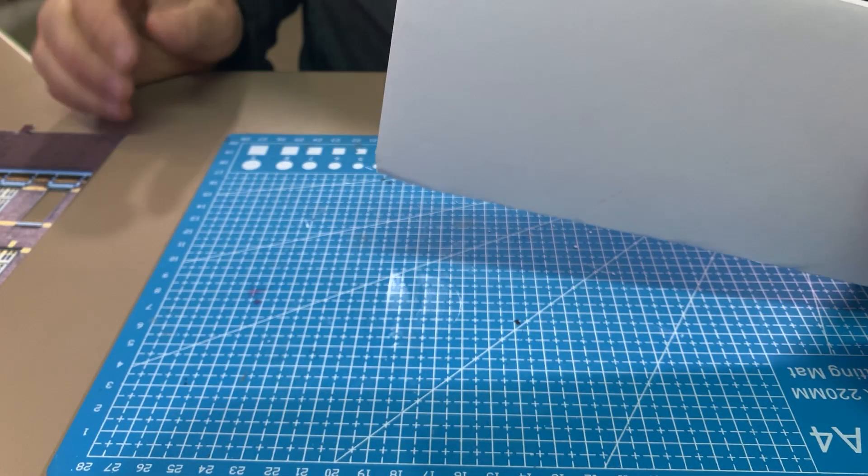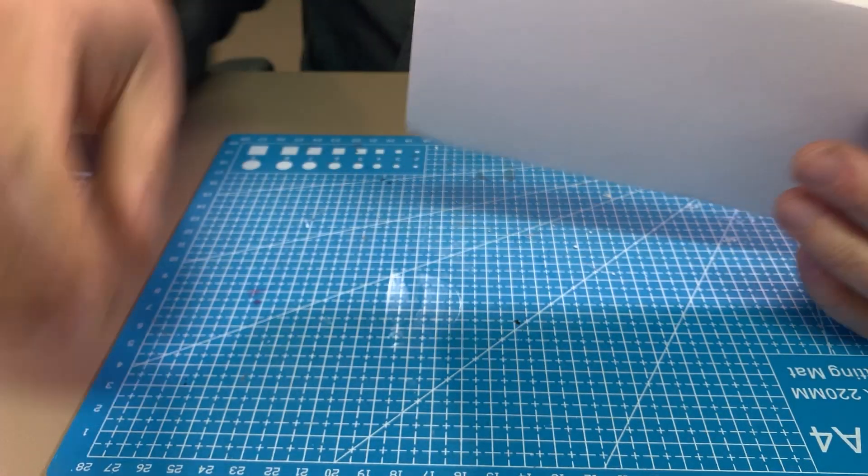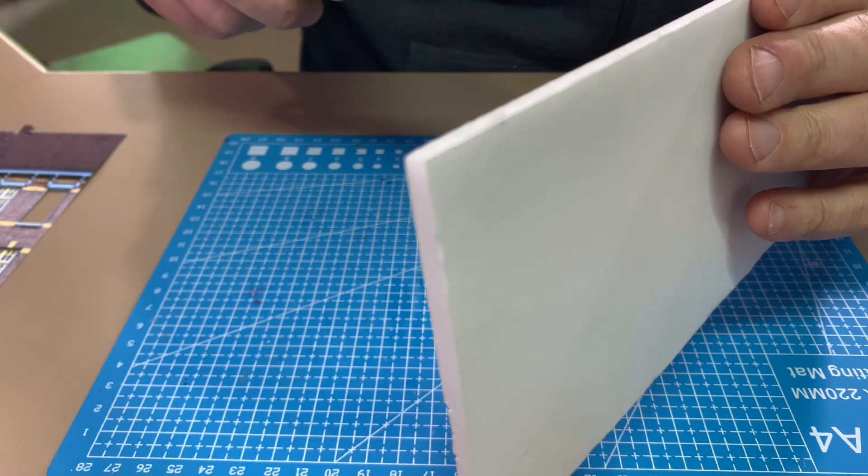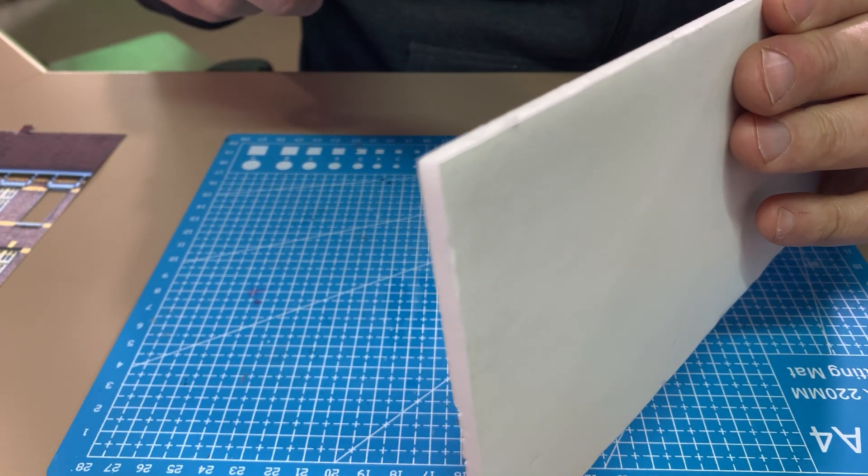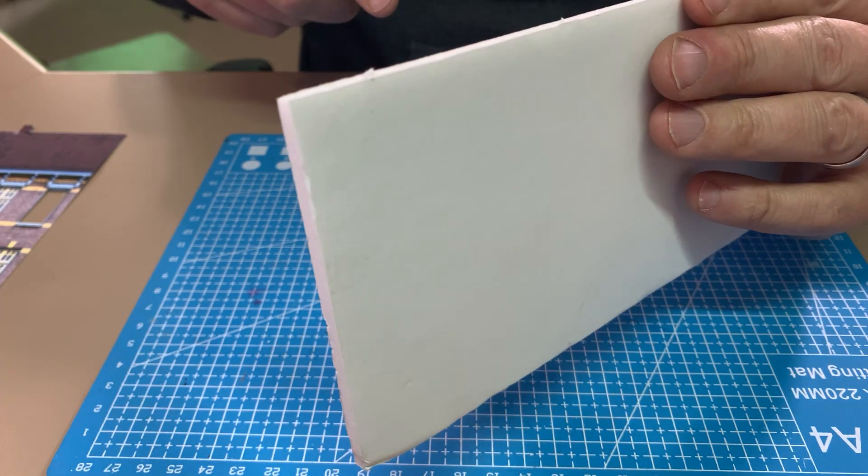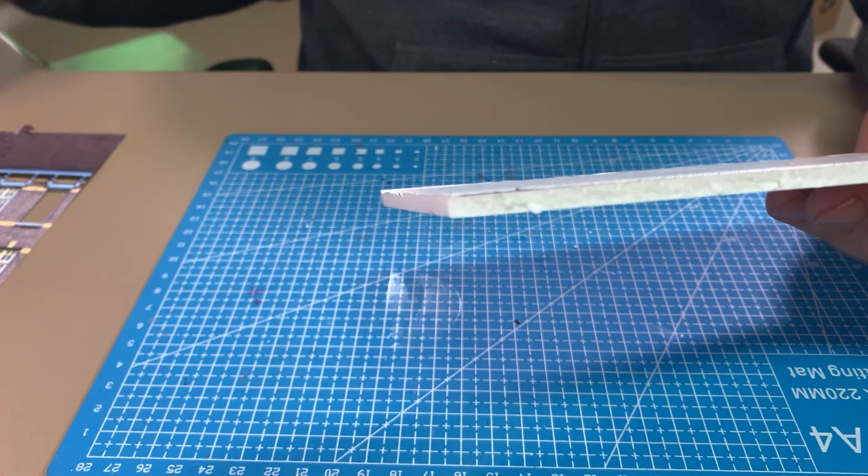Here we've got some foam core board or gator foam or whatever you call it in your part of the world. It's about five millimeters thick in metric terms and about a quarter of an inch I think in imperial terms.